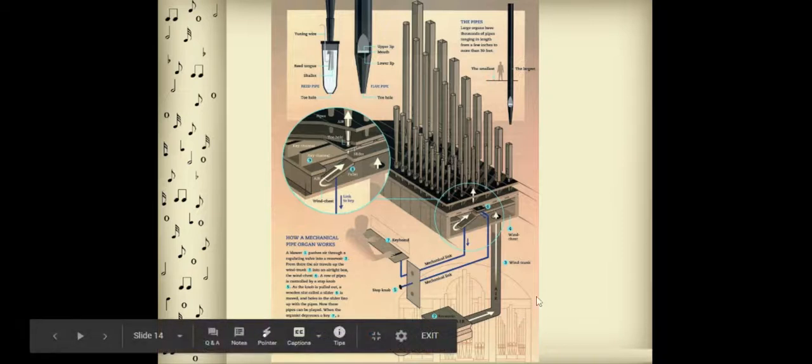Alright, so the Baroque period pipe organ wouldn't have this thing down here. It's called a blower. What you would have had is someone pumping air manually, like a turkey baster sort of thing.